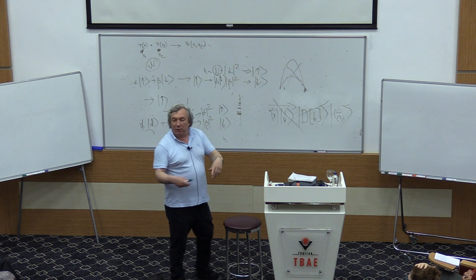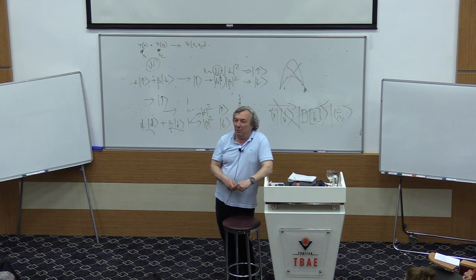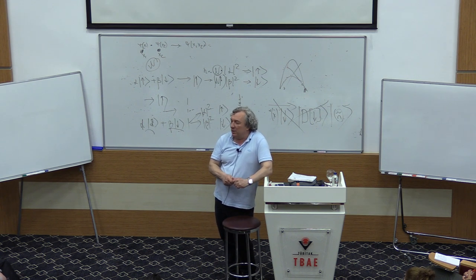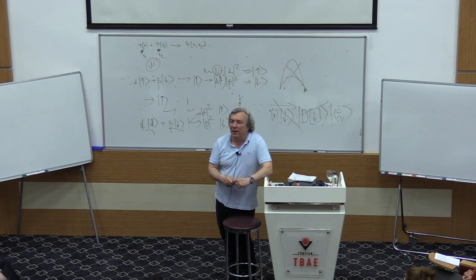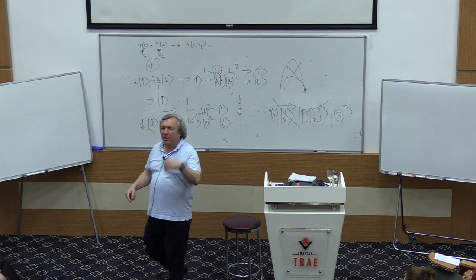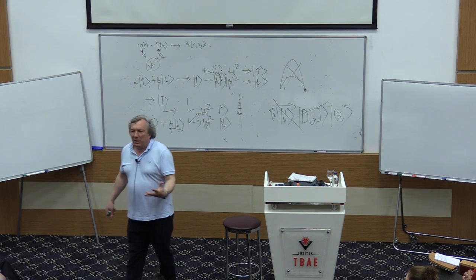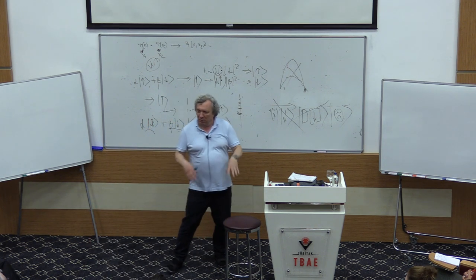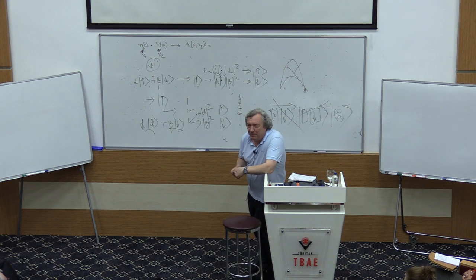The most well-known quantum algorithm is Shor's algorithm, which is based on determining the period of a periodic function. The Deutsch Oracle algorithm for distinguishing balanced from constant functions was the first. Ask Peskin what interpretation he keeps in mind — there are no CIA or KGB agents here, so he can tell you.